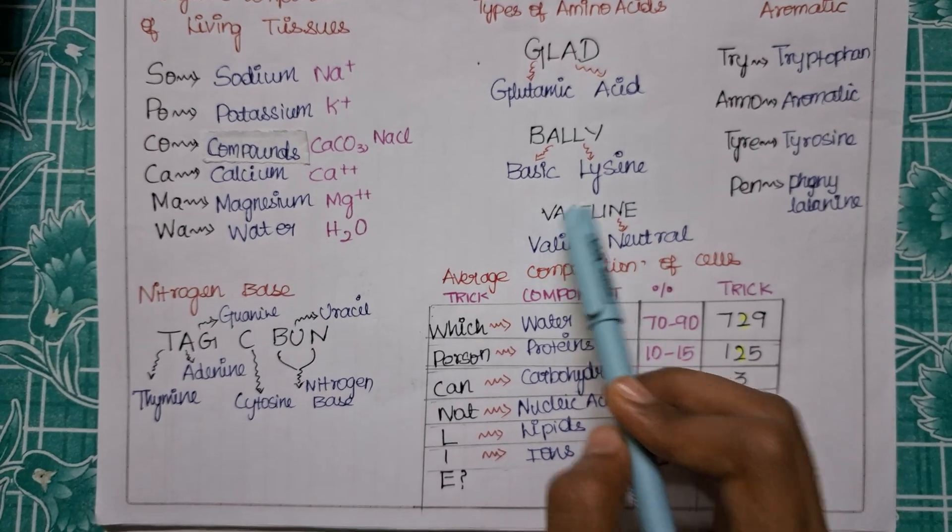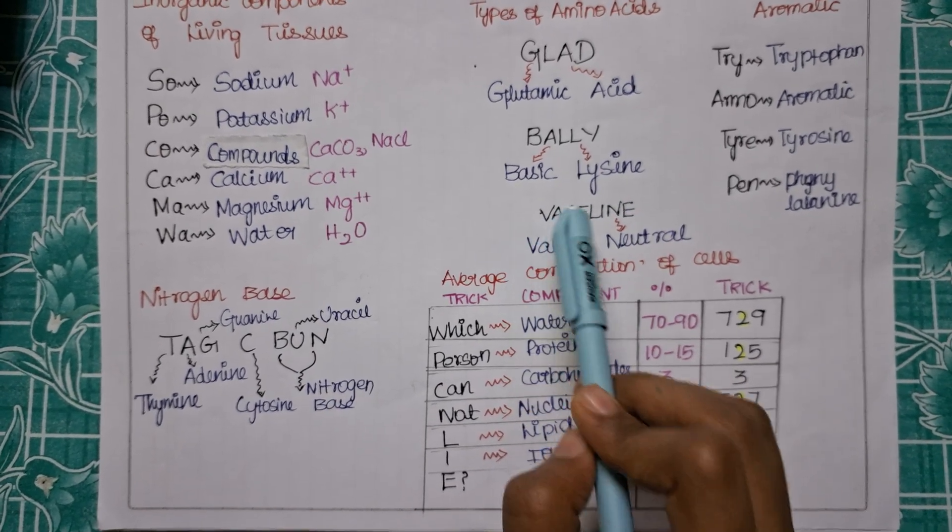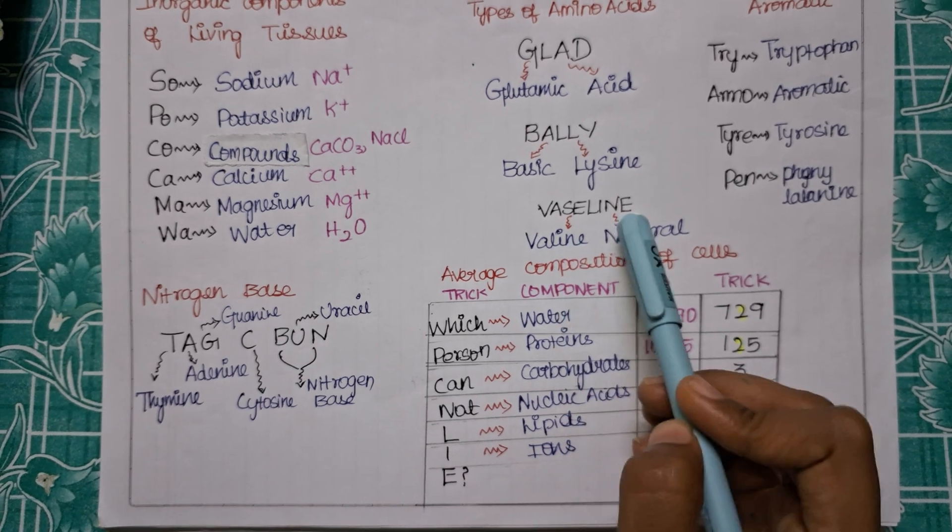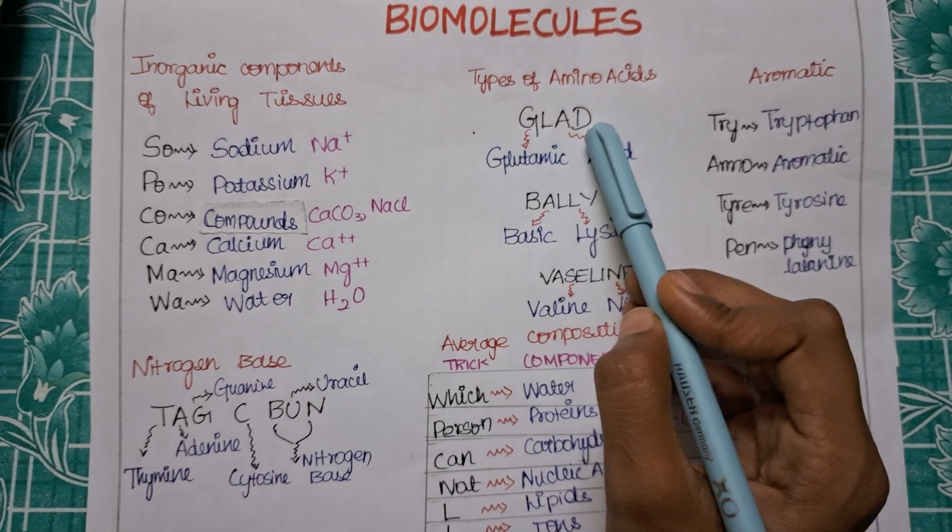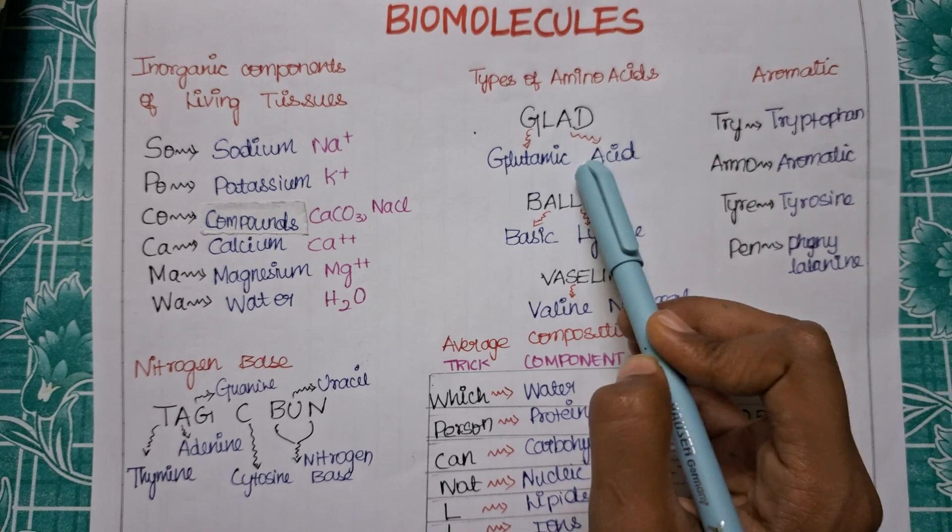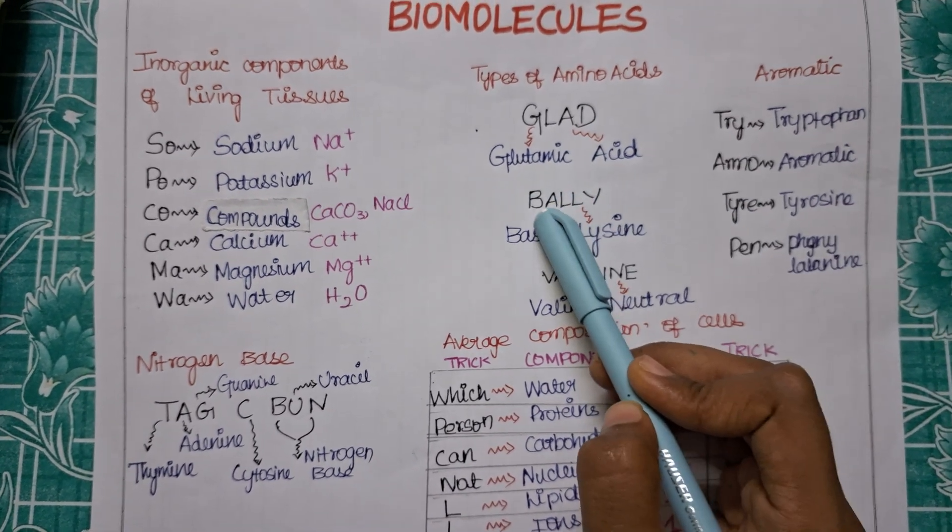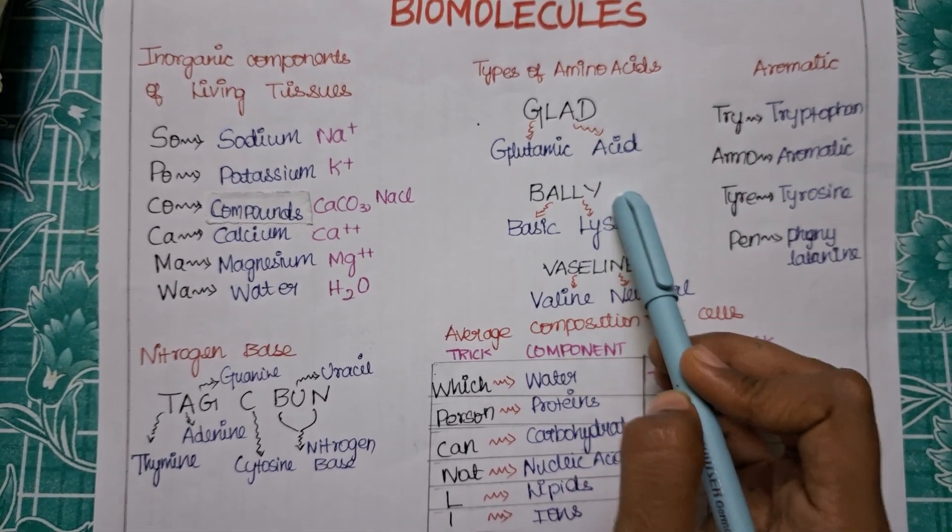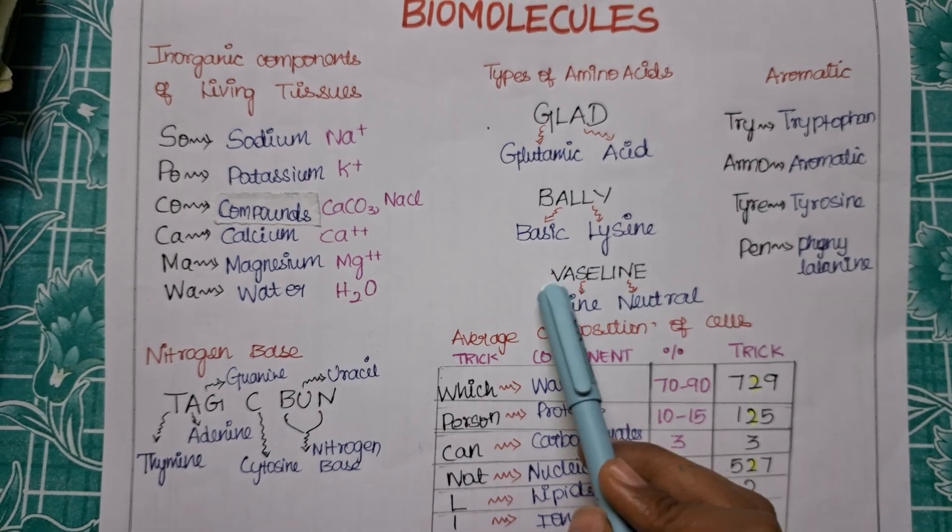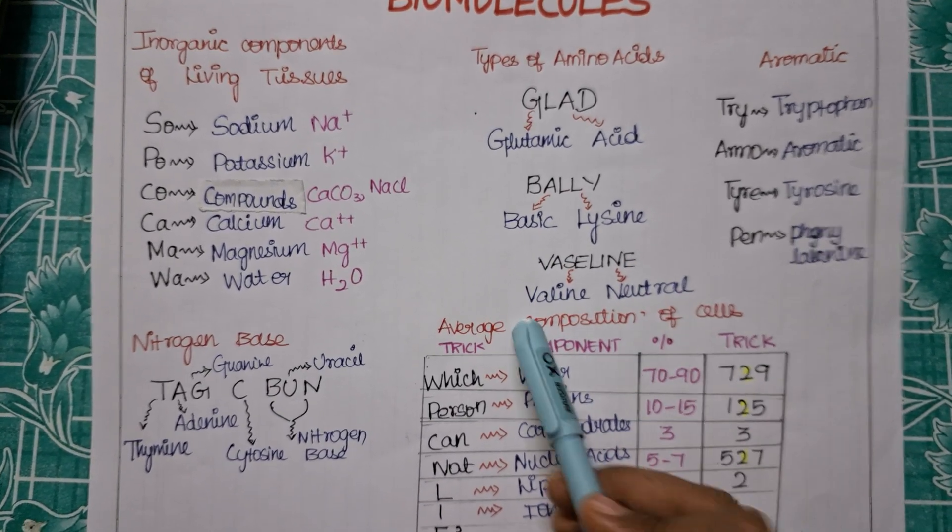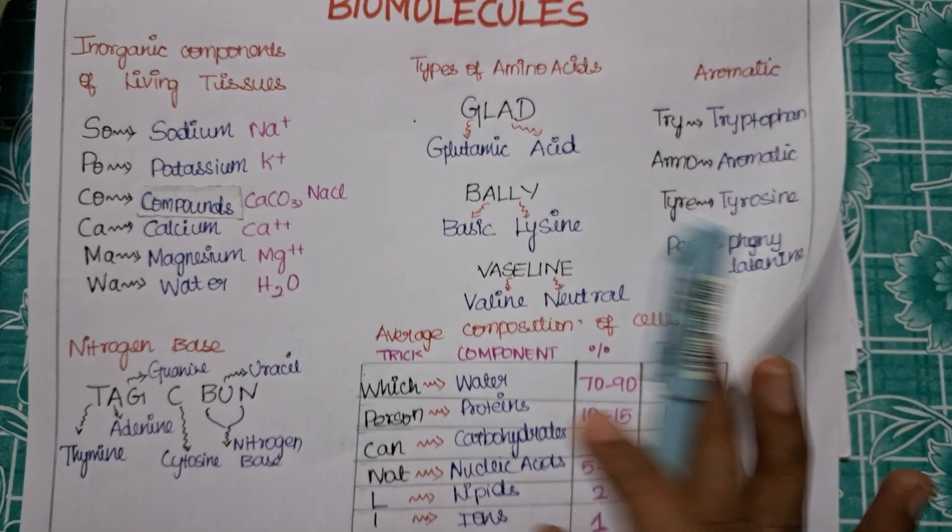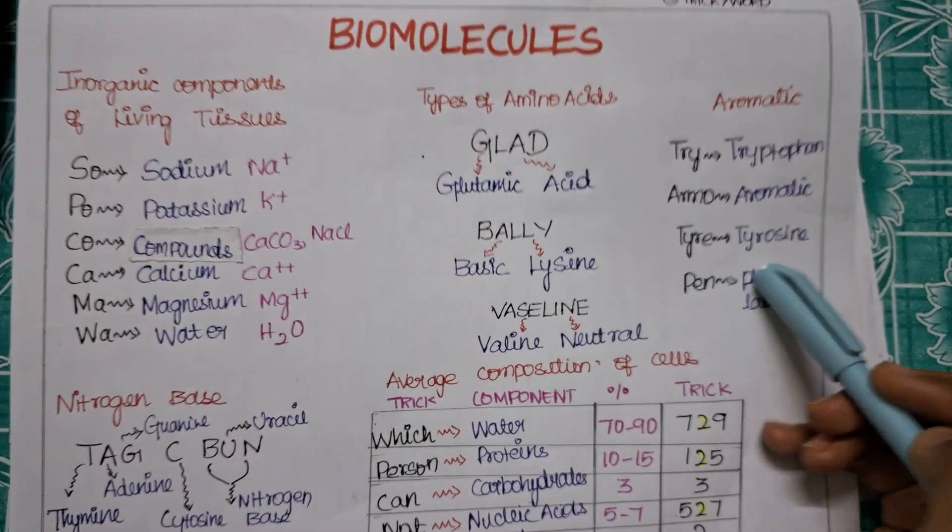Now VASELINE - VAS is for valine, NE is for your neutral. Are we clear? In GLAD, GL is for glutamic, AD is for acid. In BALLY, BA is for your basic, LY is for your lysine. And in VASELINE, VA is for your valine, NE is for your neutral. Neutral is the valine.